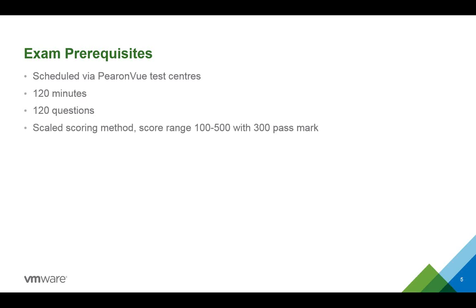VMware uses a scaled scoring method, which means no matter what kind of question pool you're getting, your bottom score will be 100, the top score will be 500, and the pass mark will always be 300 points. The points are weighted depending on what kind of question you're getting. Unlike EMC exams where you need 67% correct, you cannot say for the VCP I need 50% or 60% correct — it completely depends on the question set you're getting.